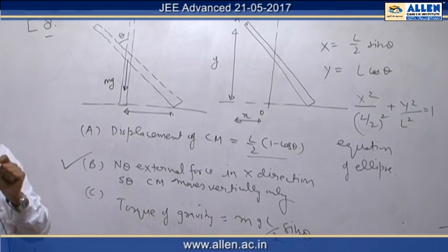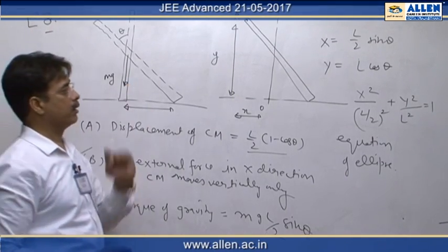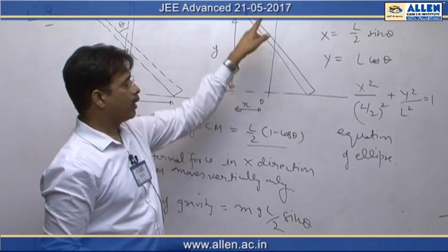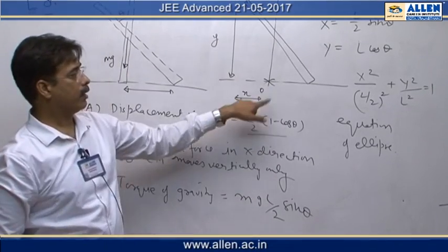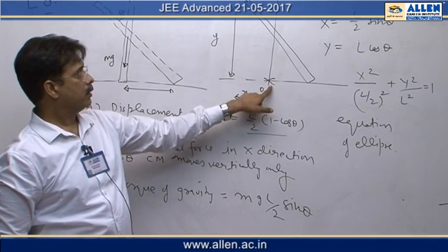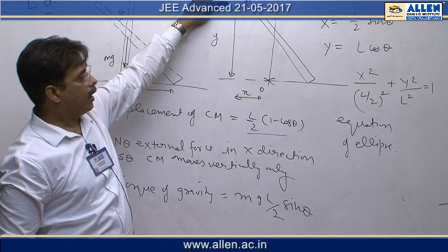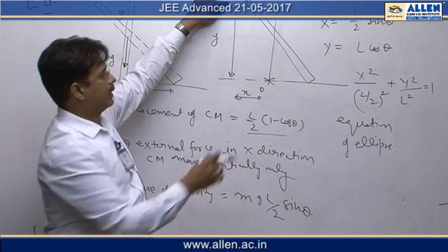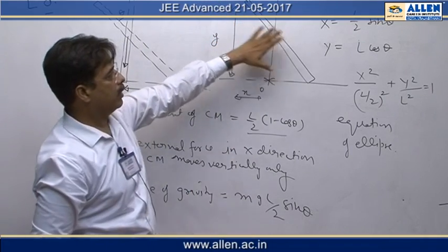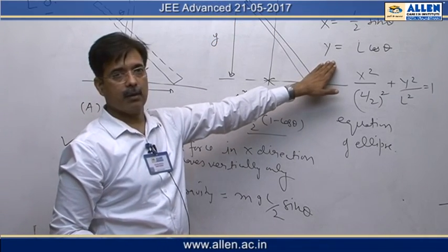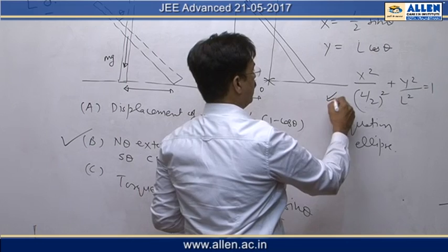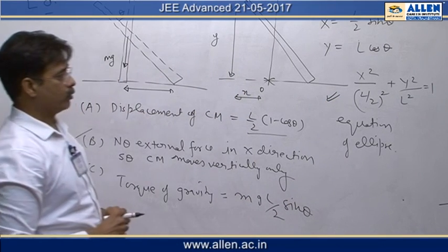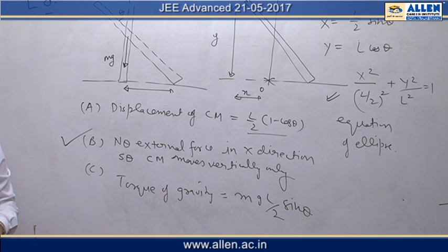And finally trajectory, equation of trajectory of point A. Taking the vertical line along which center of mass moves, taking origin at the ground just below that, the coordinates of point A are x coordinate and y coordinate respectively l by 2 cos theta and l cos theta. On eliminating cos theta we get the equation of ellipse, so only answers a, b and c are correct, d is wrong. The final answer is a, b and c.